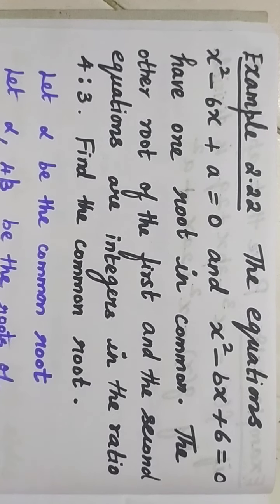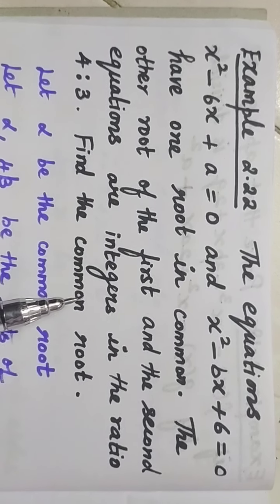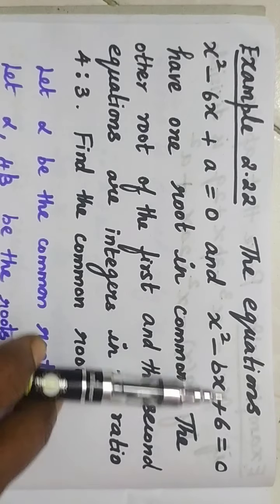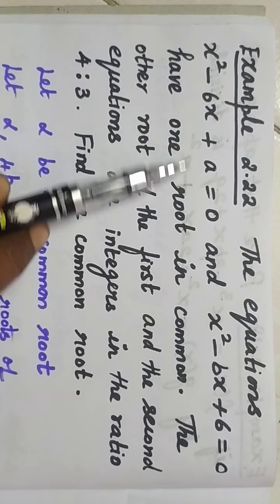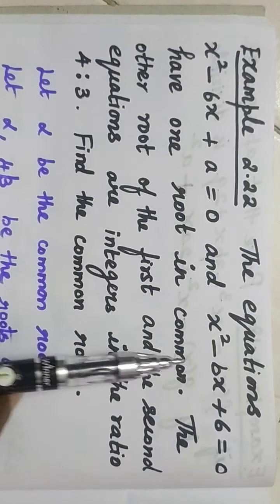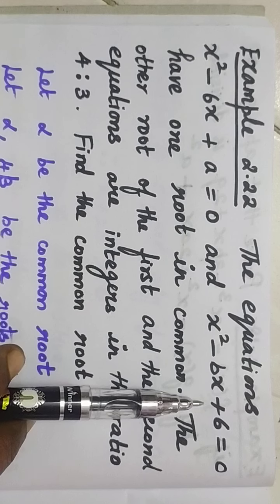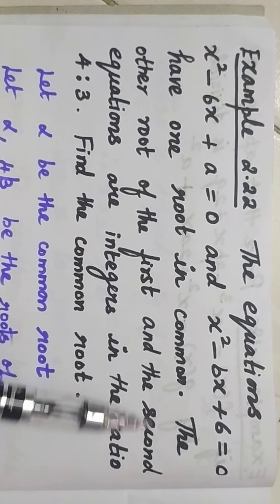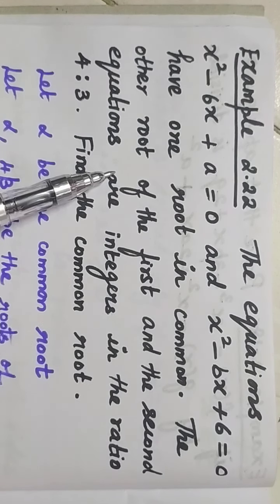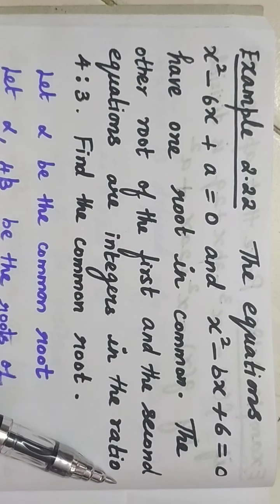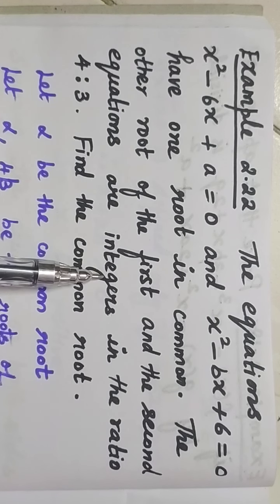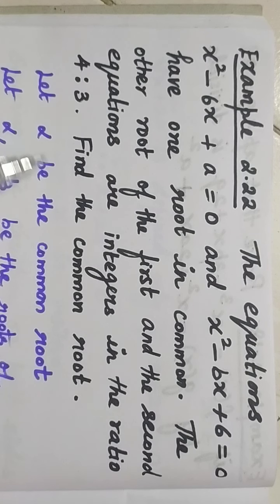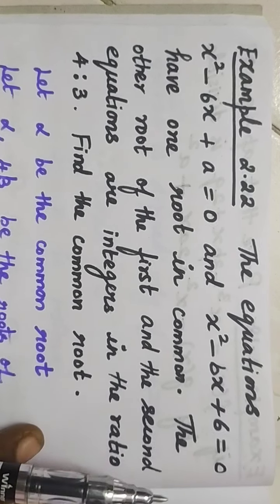Hello students, I am Raj Rajeshwari. Now let us see example 2.22. The equations x squared minus 6x plus a equals 0 and x squared minus bx plus 6 equals 0 have one root in common. The other roots of the first and second equations are integers in the ratio 4 is to 3. Find the common root.